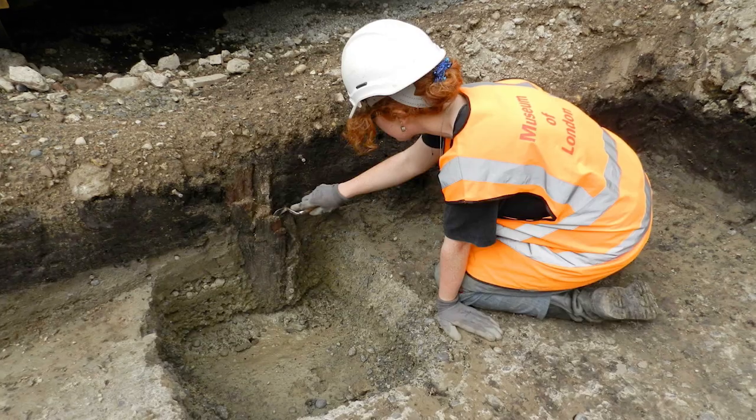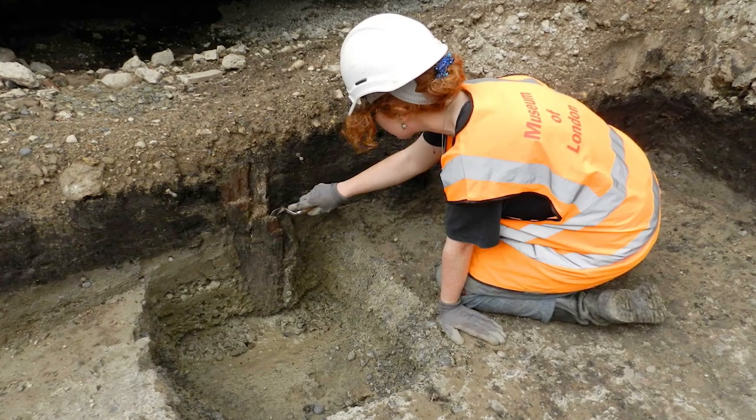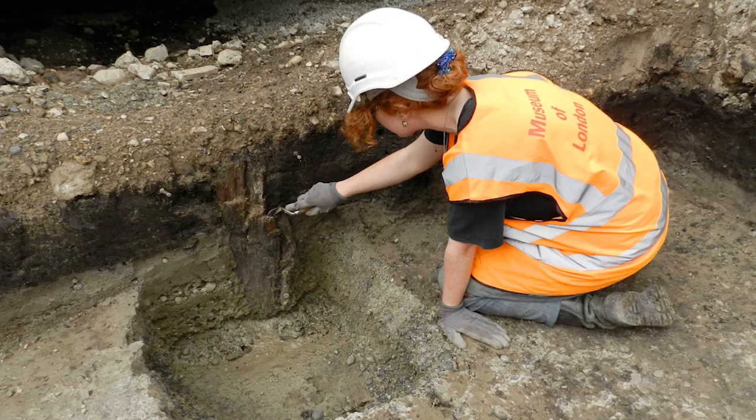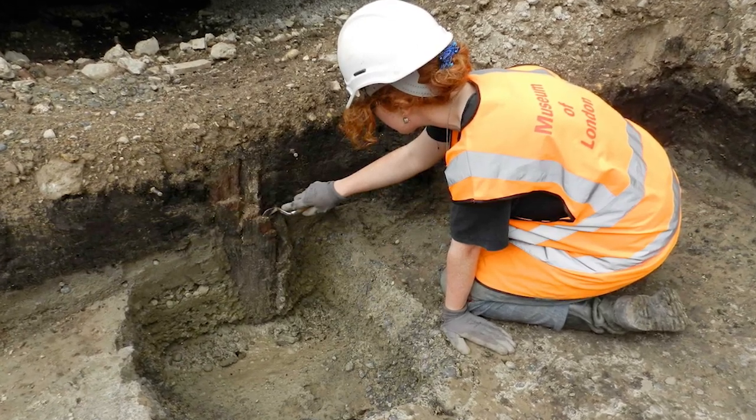In what is now Plumstead, England, archaeologists discovered a wooden trackway that ran through an ancient marsh. Carbon dating determined it to be constructed sometime around 6,000 BC.